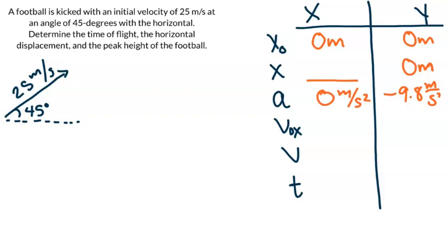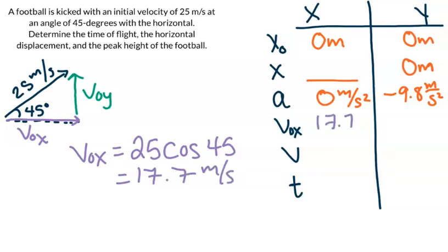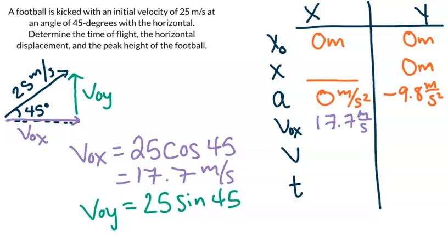Our initial x velocity and our initial y velocity can be found using trig. We can break this resultant vector, or overall velocity, into two components: our x and our y. The horizontal is our initial x and the vertical is our initial y. We can solve for our initial x velocity by taking our overall velocity and multiplying it by cosine of our angle, which is 45 degrees. So we have an initial x velocity of 17.7 meters per second. We can throw that into our chart as well, and then our initial y velocity is 25 times sine of 45.